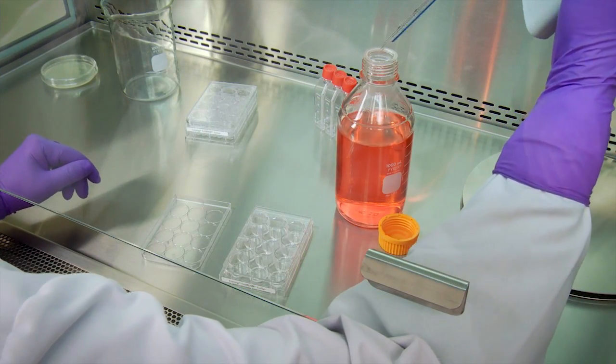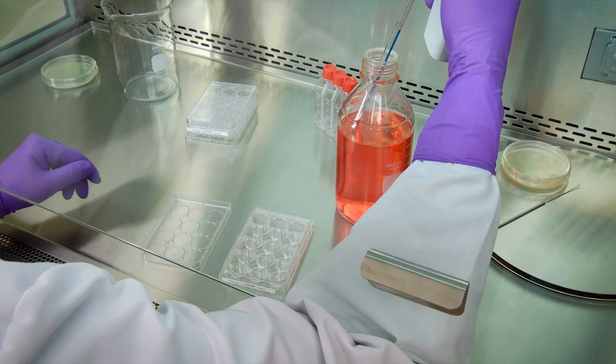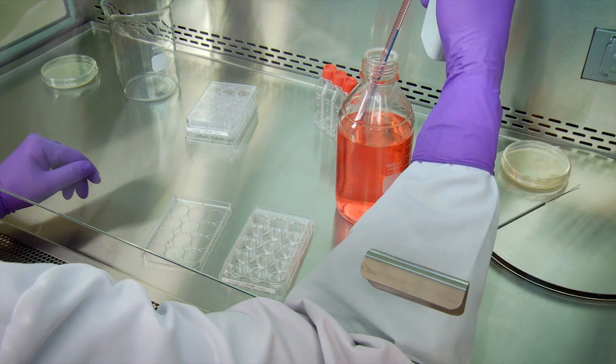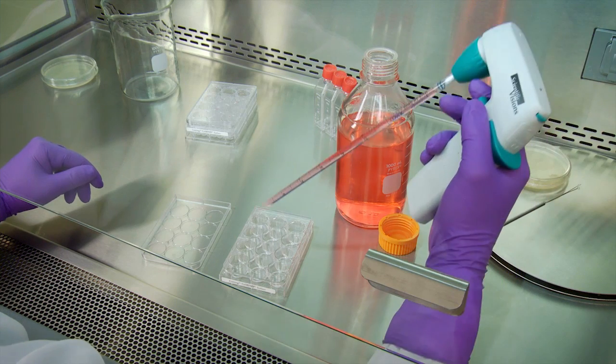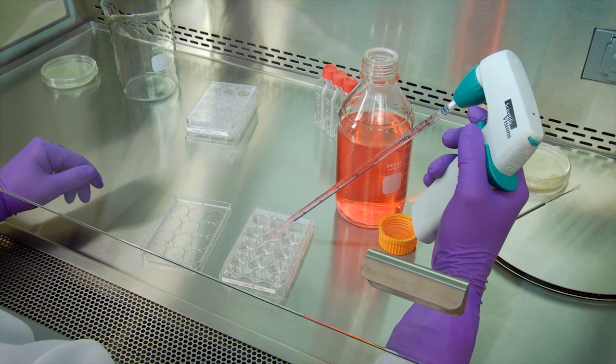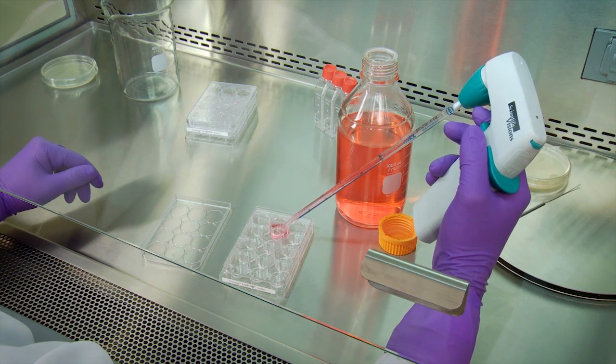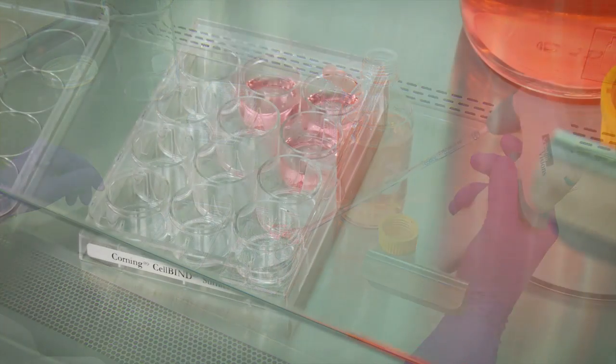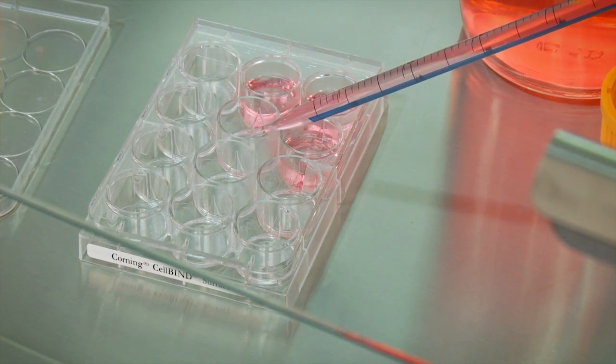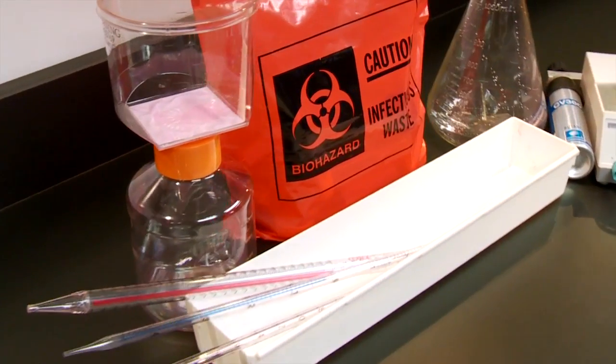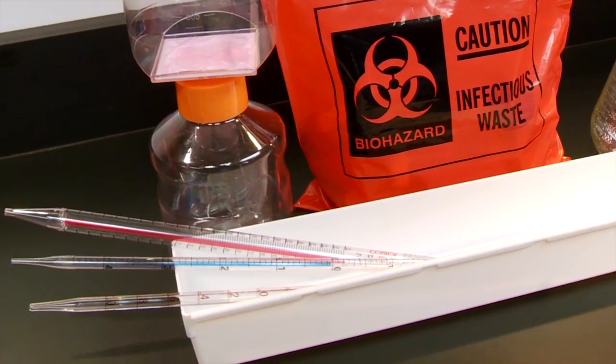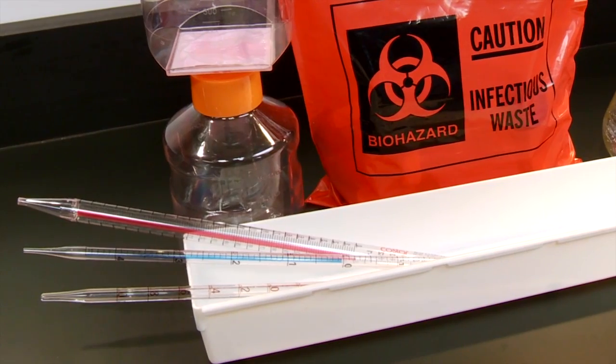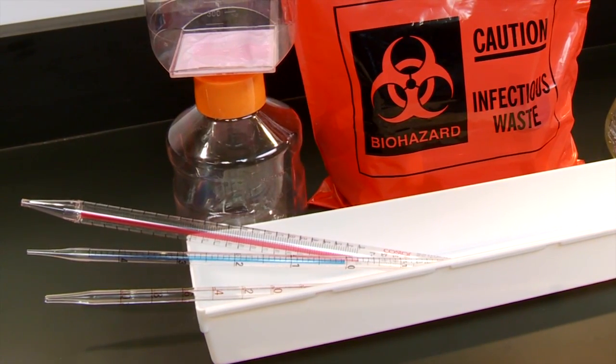Upright pipette collection containers should not be used in biological safety cabinets or placed on the floor outside the cabinet. The frequent inward-outward movement needed to place objects in these containers is disruptive to the integrity of the cabinet air barrier and can compromise both personnel and product protection. Only horizontal pipette discard trays containing an appropriate chemical disinfectant should be used within the cabinet.